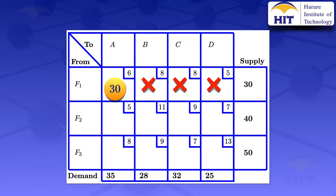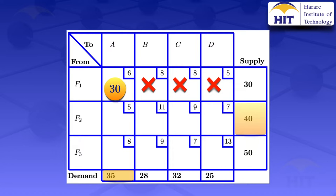For that row, we look at F2 to A. We look at the supply — there's a supply capacity of 40 — and the demand for destination A is 35. But in this column we've already allocated 30, so to see how much we can allocate there, we subtract the 30 from the total demand. So it would be 35 minus 30, which gives us 5. Then we take the minimum of the 5 and the 40, and the minimum there is 5.